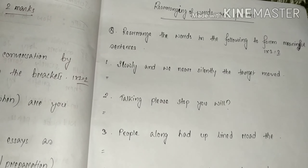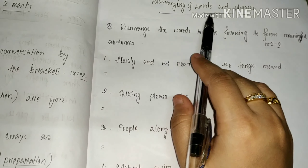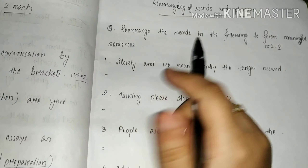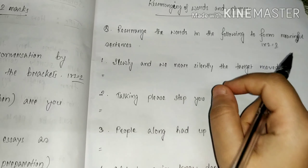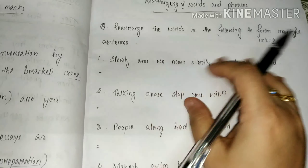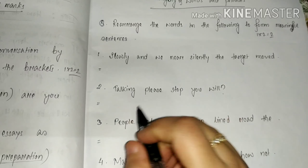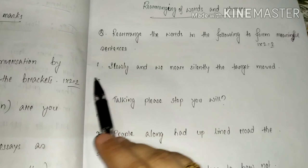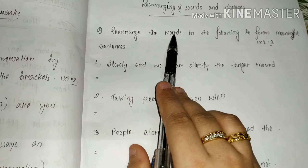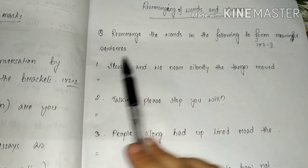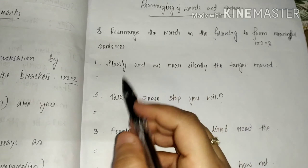Hello students, again we are here with one of the simplest things in English. We will be doing rearranging of words and phrases. What do you mean by rearranging? There will be words given to you and you have to make a meaningful sentence out of the given words. You will be getting questions in an exam like: rearrange the words in the following to form meaningful sentences. You will get two marks from this topic. Let's start — it's a very simple thing.